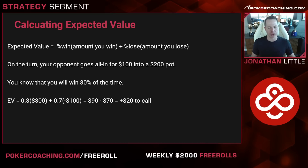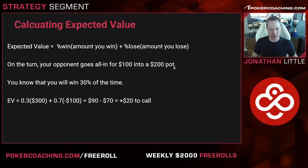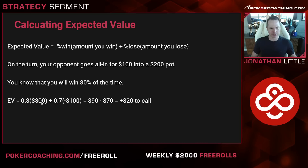Let's say on the turn your opponent goes all-in for $100 into a $200 pot, and you know you're going to win 30% of the time because you have some sort of draw and if you make it you'll always have the best hand. Your expected value is 0.3 times $300 (the $200 pot plus the $100 bet) plus 0.7 times negative $100. Solving this gives you 90 minus 70, which is $20 profit to call in this situation.